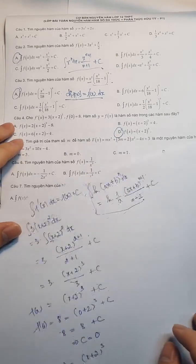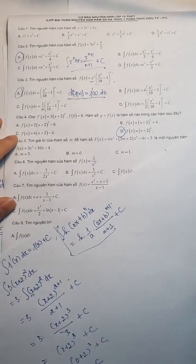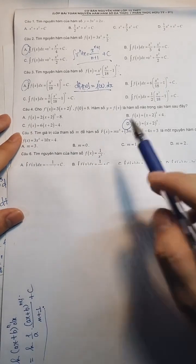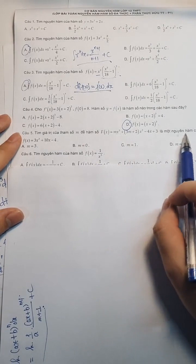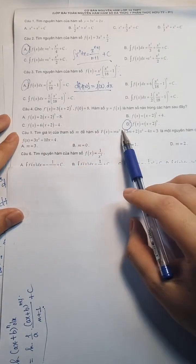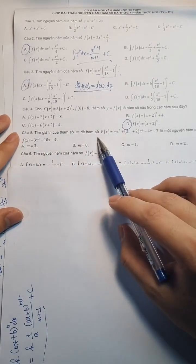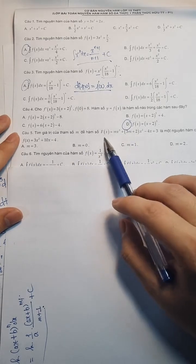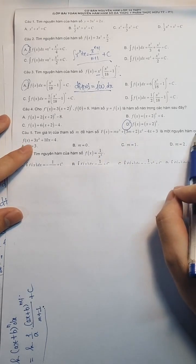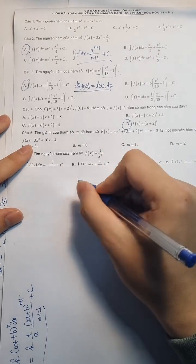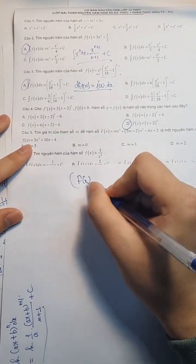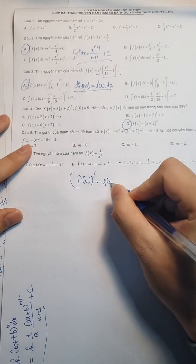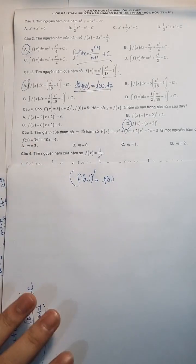Câu số 5 này. Tìm giá trị của hàm số này đúng không? Là một nguyên hàm của hàm số này. Bây giờ người cho F lớn thì bằng thằng này. F lớn là một nguyên hàm đúng không? F lớn là một nguyên hàm, thì có phải F lớn của x lấy đạo hàm thì bằng f(x) đúng không?